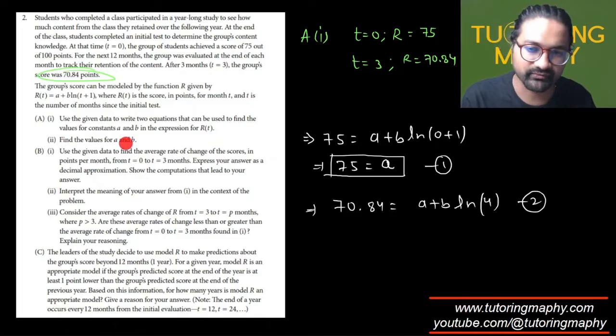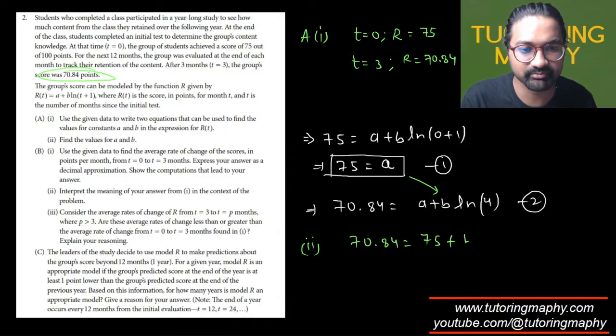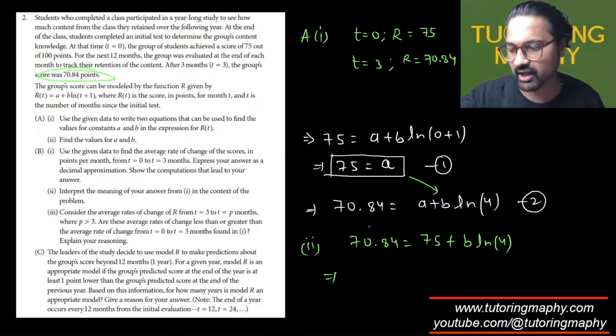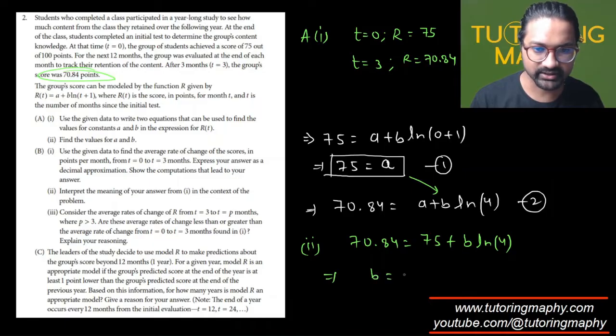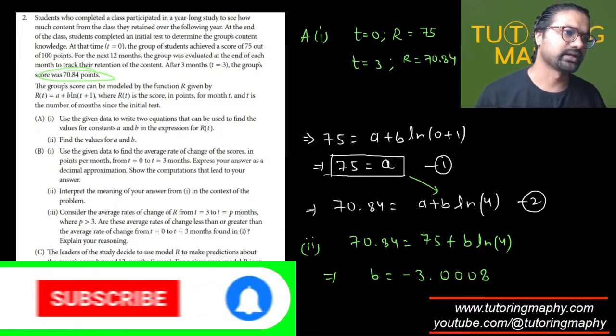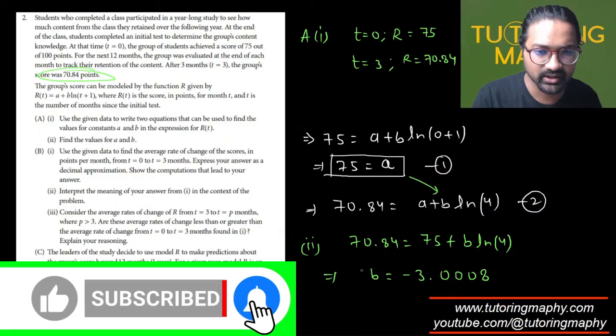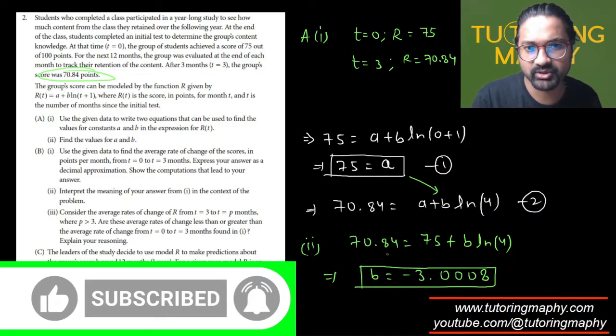In part 2, they're asking us to find the value of a and b. It's pretty straightforward. We already got the value of a. Just plug this value of a over here. So that's going to look like 70.84 is equal to 75 plus b natural log of 4. So 70.84 minus 75 divided by natural log of 4. That value is coming as negative 3.0008. I'm going to box this up.